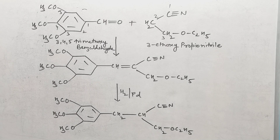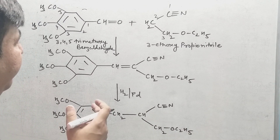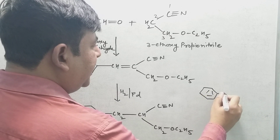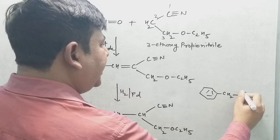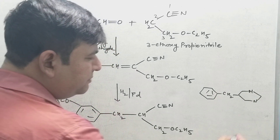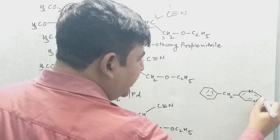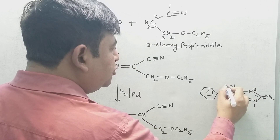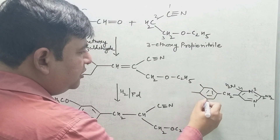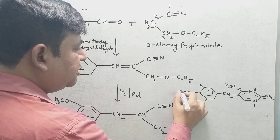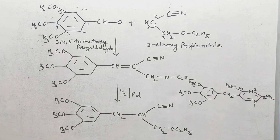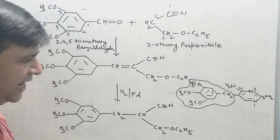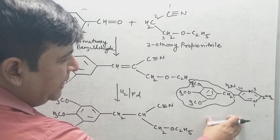Before moving to the synthesis, let me give a brief overview of the structure. The benzene ring is connected via CH2 to a pyrimidine ring. The pyrimidine has NH2 groups at the second and fourth positions, and three methoxy groups are on the benzene at the 3, 4, and 5 positions.